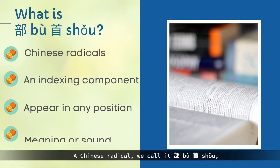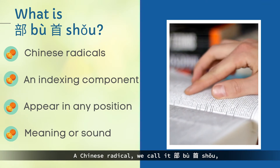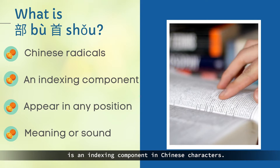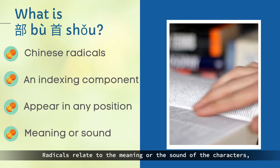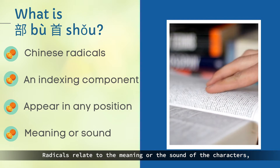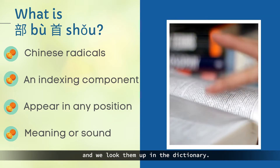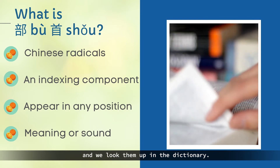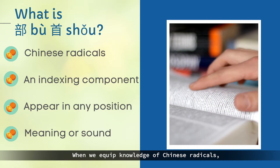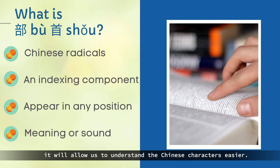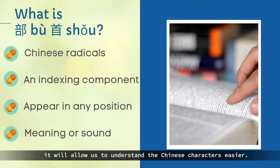The Chinese radical — we call it 部首 — is an index component in Chinese characters. Radicals relate to the meaning or the sound of the characters and we look them up in the dictionary. When we equip ourselves with knowledge of Chinese radicals, it will allow us to understand Chinese characters more easily.